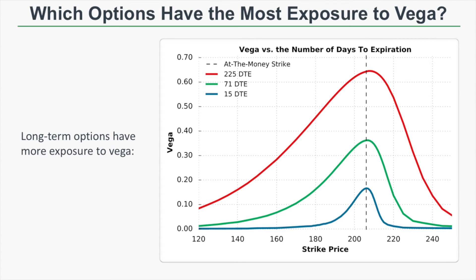In this next visual, we're looking at vega values at each strike price across multiple expiration cycles. The blue line is 15 days to expiration, the green line is 71 days, and the red line is 225 days to expiration. The longer-term options have more exposure to vega — again because longer-term options are more expensive, have more extrinsic value, and therefore have more vega exposure.